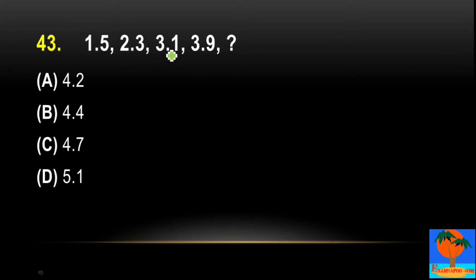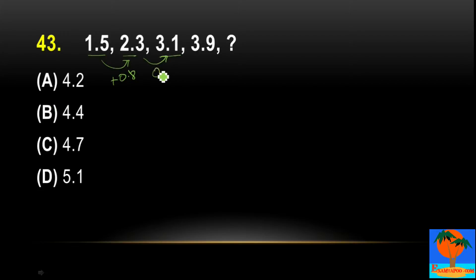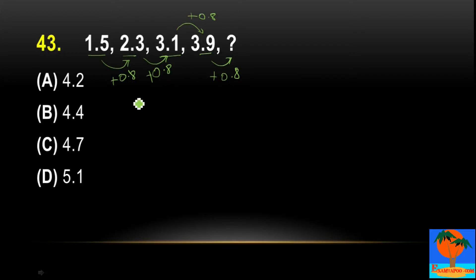You can see a series increasing by plus 0.8. Then 2.3, 3.1 — it is again 0.8 increase. Then 3.1, and you can see it is 0.8 again. So definitely what will happen next is simple: we will increase by 0.8. So 3.9 plus 0.8 will be 4.7. The answer is 4.7.